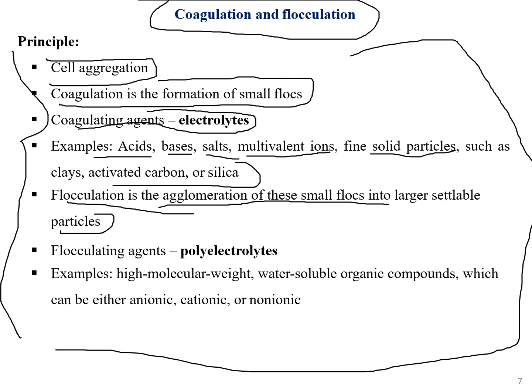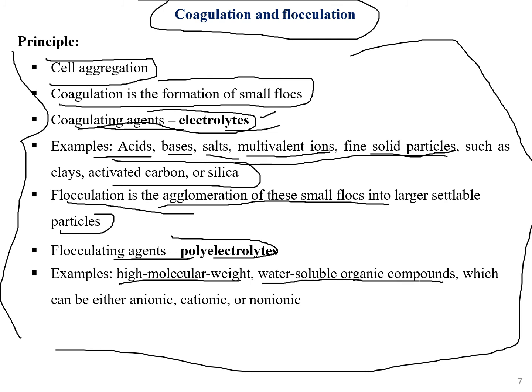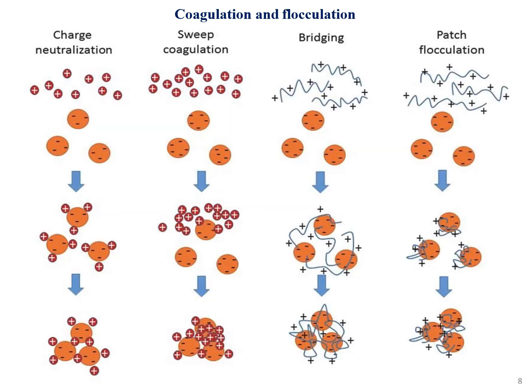Flocculation combines the small coagulated colonies into a large combined particle so that it becomes heavy and settles to the bottom, making purification easier. For coagulation, the agents used are electrolytes; for flocculation, the agents are polyelectrolytes. Polyelectrolyte flocculants must be high molecular weight, water-soluble organic compounds that can be anionic, cationic, or non-ionic.